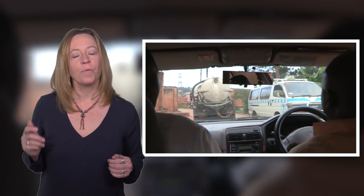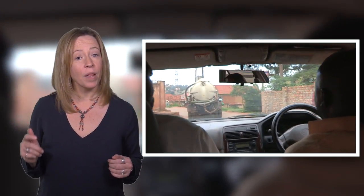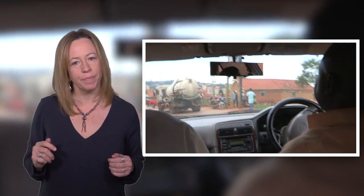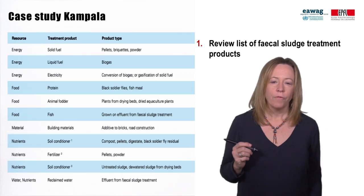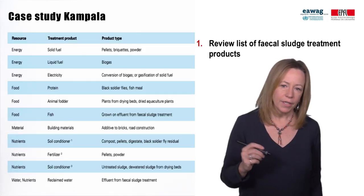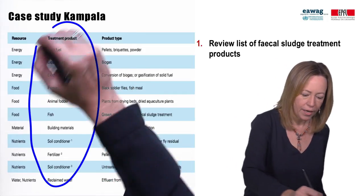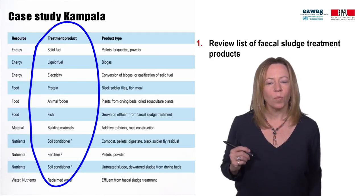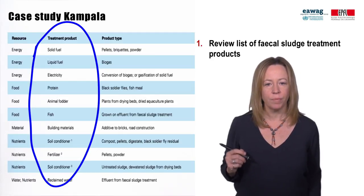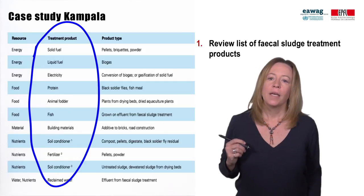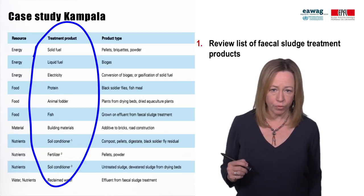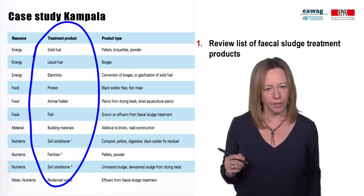Maybe that all sounds a bit abstract, so let's look at a real-life example from Kampala, Uganda, to understand a bit more how this method can be implemented. The first step is to review the list of fecal sludge treatment products. From this list, we want to decide what treatment products are actually relevant for our city. In Kampala, all these products could potentially be produced from treatment of fecal sludge.